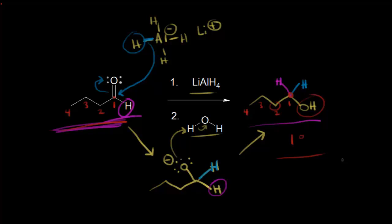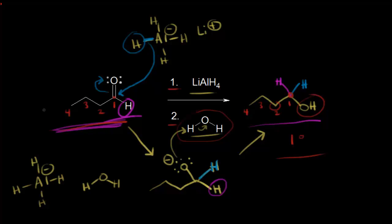For lithium aluminum hydride, you definitely have to show these two different steps. Lithium aluminum hydride reacts violently with water. If you have lithium aluminum hydride and water together, you get a violent and sometimes potentially dangerous reaction. What happens is you transfer a hydride, taking a proton off of water, and that forms hydrogen gas, H2, which could be potentially dangerous. Sodium borohydride is not quite as reactive, so you can use it in an alcohol solvent, but you can't do that with lithium aluminum hydride — you have to make sure everything is completely dry.